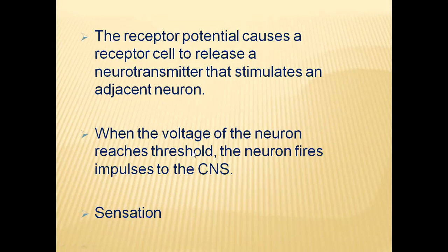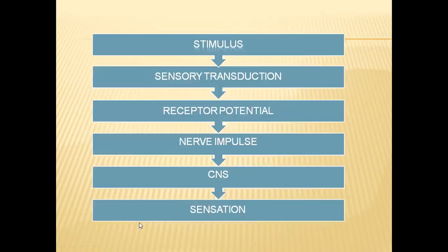When the voltage of the neuron reaches the threshold value, the neuron fires impulses — action potentials — to the central nervous system. After receiving these impulses, the central nervous system feels the sensation. First, stimulation of the sensory receptor occurs; the receptor performs sensory transduction, resulting in receptor potentials; these generate nerve impulses or action potentials that are conducted to the CNS, where sensation is perceived.